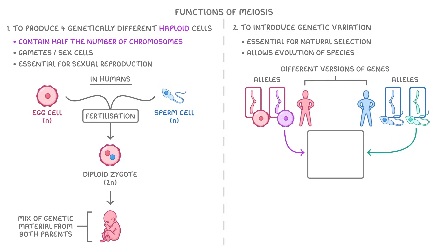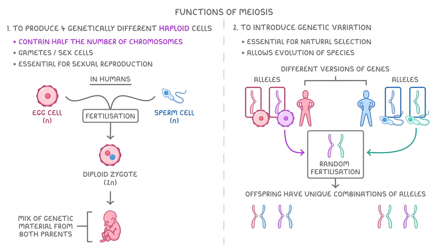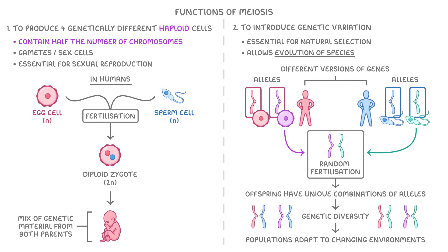As a result, the combination of alleles that each offspring gets from each parent will be pretty random, depending on which sperm cell fertilizes which egg cell. This random fertilization of gametes means that, apart from identical twins, all offspring have a unique combination of alleles. It's this genetic diversity that means populations can adapt to changing environments over time, and this is absolutely essential for the evolution of species.